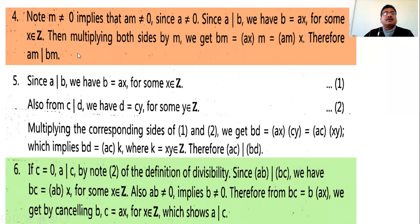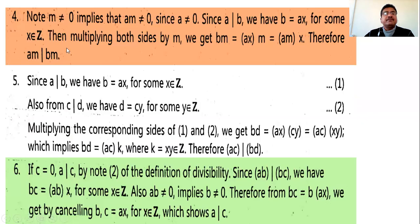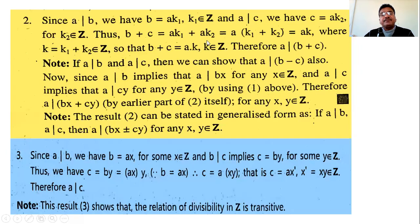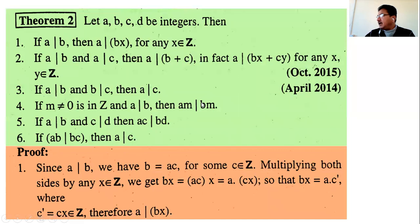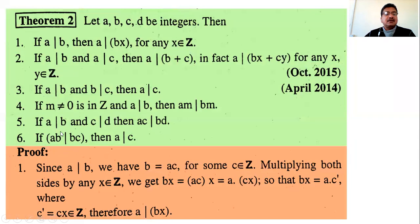Fourth theorem: given m not equal to zero and a divides b, show am divides bm. Since a divides b, we have b = ax for some x in Z. Multiply both sides by m: bm = axm = (am)x. Since x is an integer, bm is expressed in the form am times some integer, which implies am divides bm.